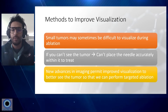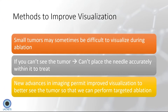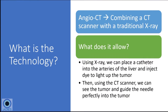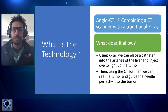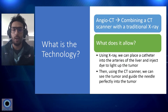In terms of methods to improve visualization, small tumors can be very difficult to visualize during ablation. I tell patients it's a good thing their tumor is very small because it hasn't grown a lot, but it's also a bad thing because it makes it very difficult to find. If you can't see the tumor, you can't treat it. We're now utilizing new imaging advances to help visualize tumors better so we can perform targeted ablations. When we do these procedures, we typically use an x-ray machine, a CT scanner, or an ultrasound — and now we have technologies that combine all of these in one room.